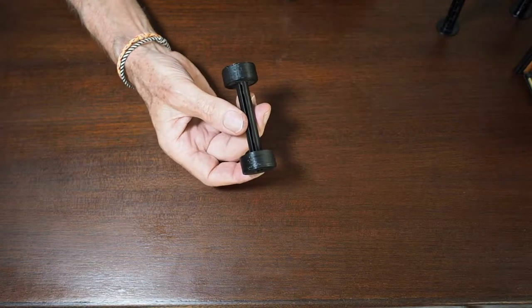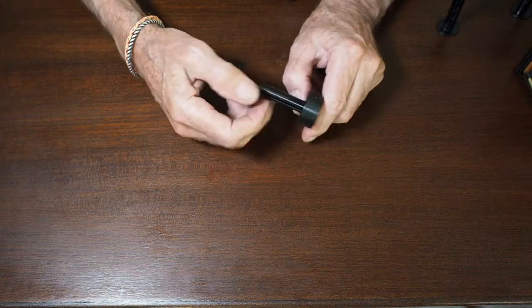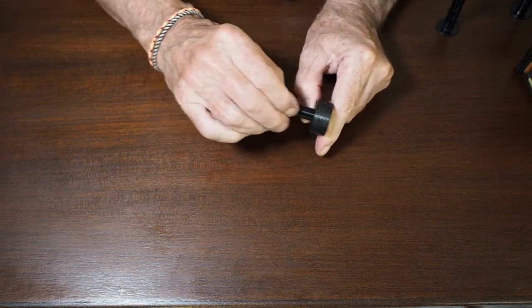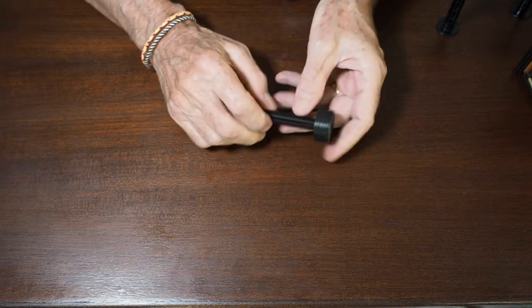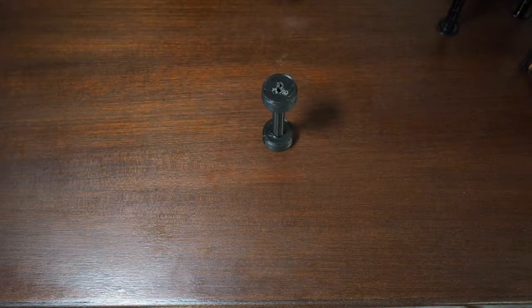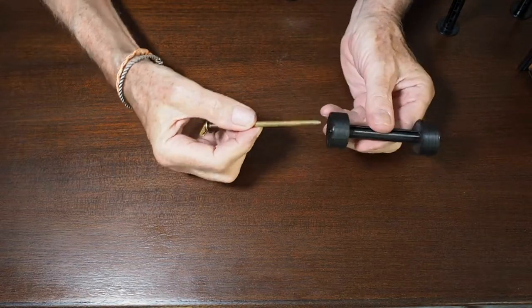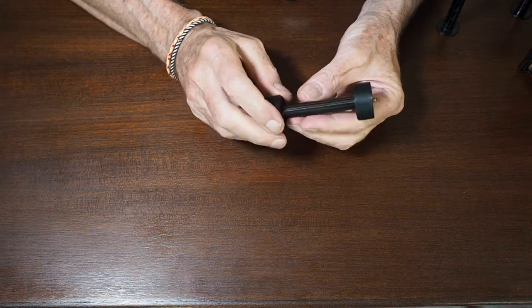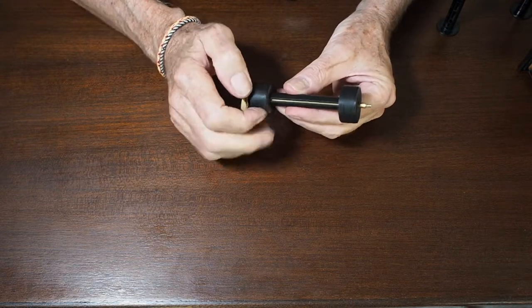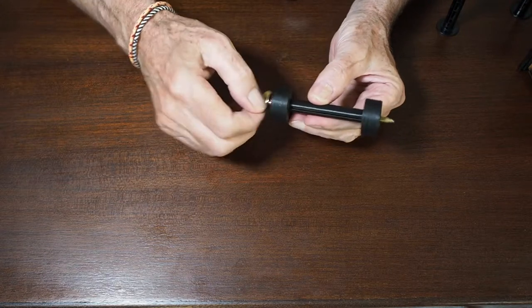Now a couple of points about the take-up spool that you need to be aware of. The first thing is that it has a slot which goes right through the middle for feeding the leader of the film. Also there is this brass rod but when you put it in the camera this has to go through the centre as well. And I've found a couple of times when testing that the leader of the film jams this and you can't get it in.